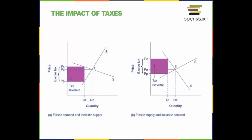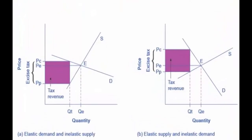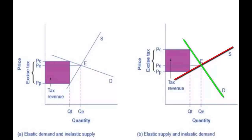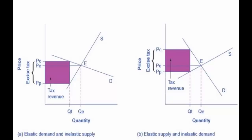Let's look at how elasticity determines if certain taxes, like an excise tax, will generate more or less tax revenue for the government. An excise tax introduces a wedge between the price paid by consumers, PC, and the price received by producers, PP. When demand is more elastic than supply, the tax incidence on consumers (PC minus PE) is lower than the tax incidence on producers (PE minus PP), as seen in the graph on the left. When supply is more elastic than demand, the tax incidence on consumers (PC minus PE) is larger than the tax incidence on producers (PE minus PP), as seen on the graph on the right. The more elastic the demand and supply curves are, the lower the tax revenue.